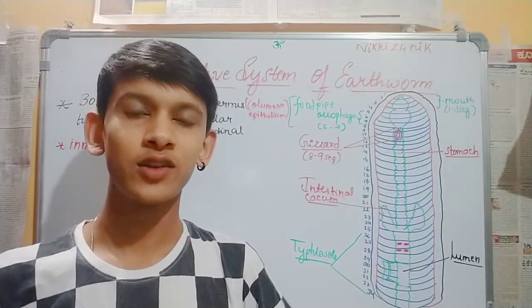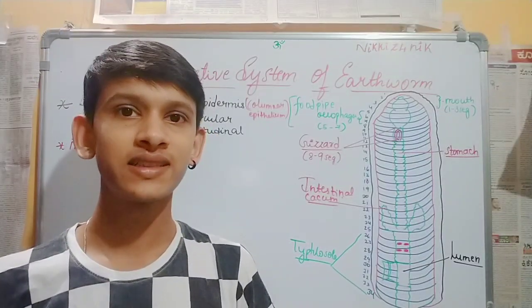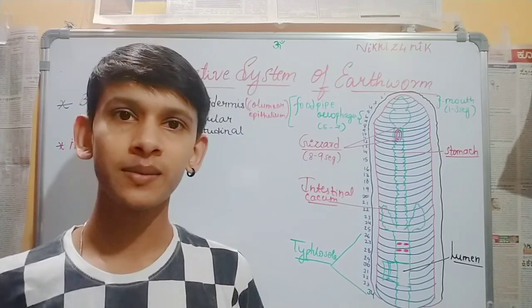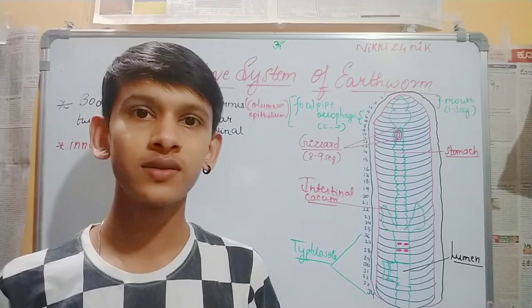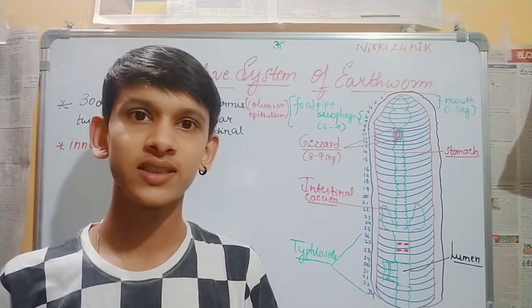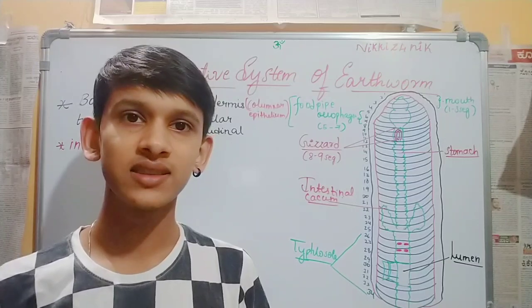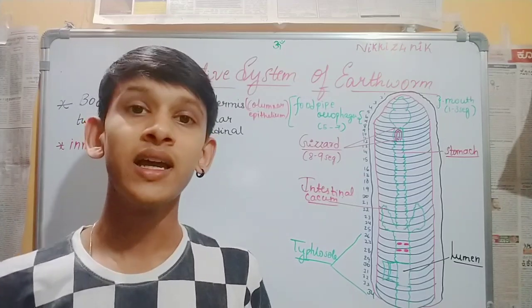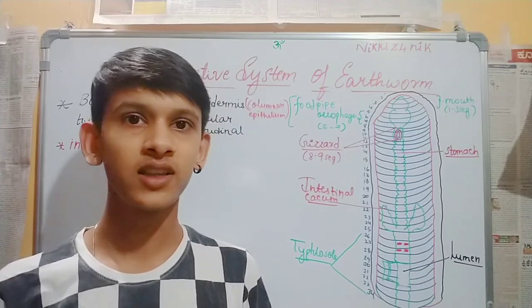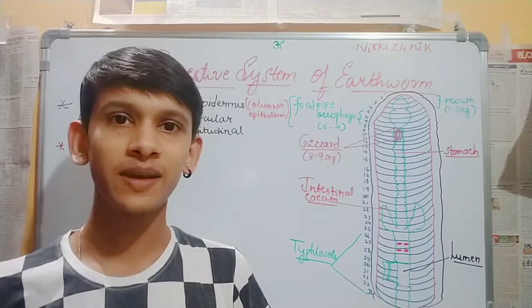Hello friends, welcome to Nikhil's Biology. In this video, we will talk about the Digestive System of Earthworm, which is considered in the Anatomy of Earthworm. Anatomy of Earthworm includes Digestive System, Respiratory System, Excretory System and Circulatory System. This is the Structural Organization in Animals chapter.